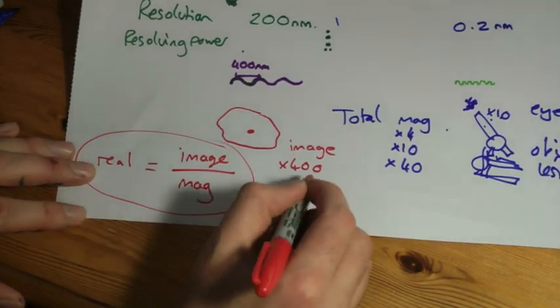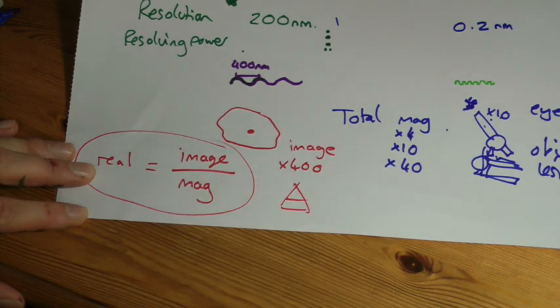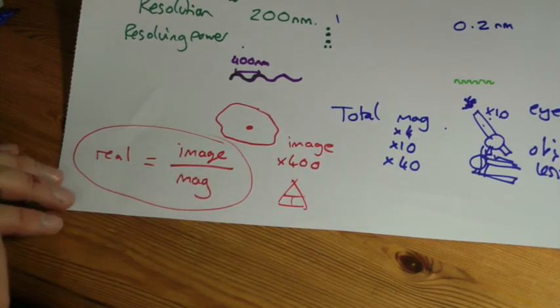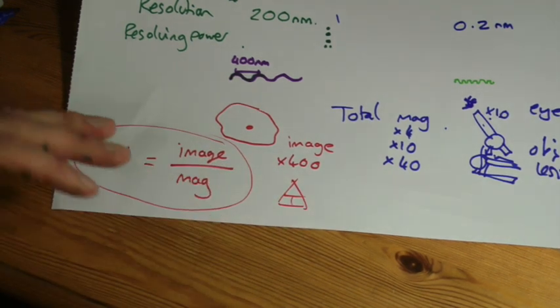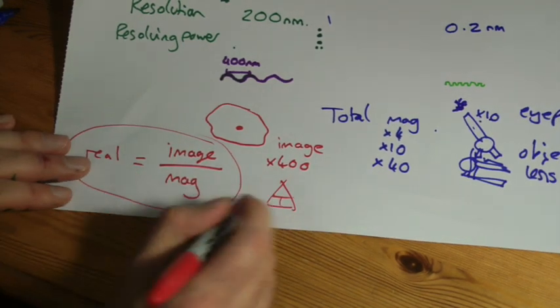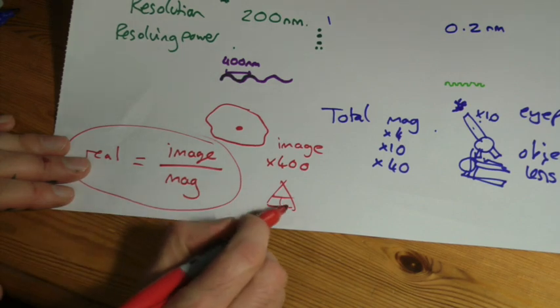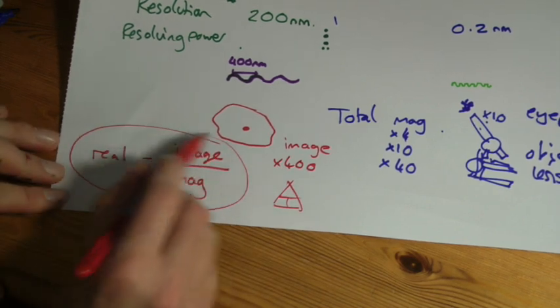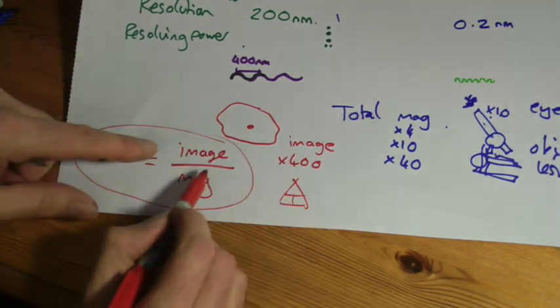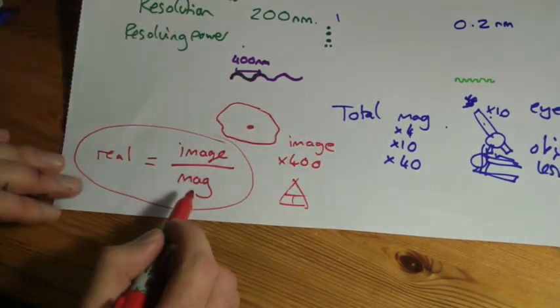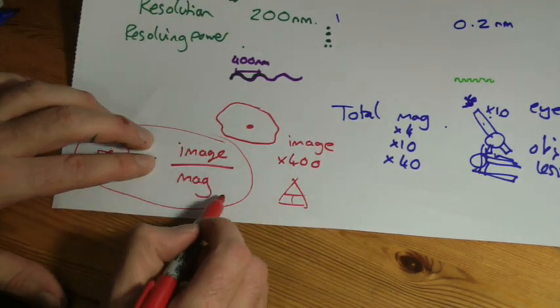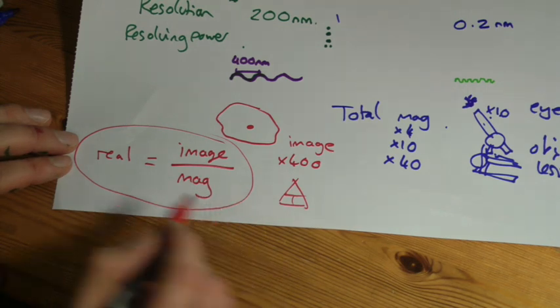I know people like to use these triangles. I'm not so keen on them. You know, if it helps you remember it, fine. I would not necessarily prefer people to use that. I think if you can remember it that way, if I look at a picture that is 400 times bigger or however many times bigger, the real thing must be 400 times smaller. So image divided by magnification.